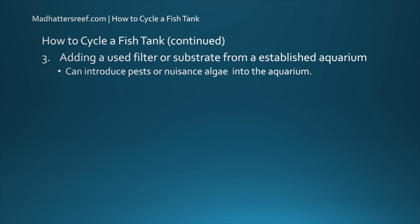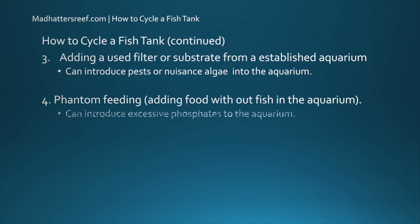The fourth method of cycling an aquarium is phantom feeding. What this is, is basically feeding an aquarium with fish food without any fish in there. The problem with this is it introduces a lot of phosphates into the aquarium because of the amount of food that you have to add to the tank for it to begin cycling. Another issue with phantom feeding is it takes a long time to get the cycle going. Much like the other three methods we've talked about, it can take upwards of four to six weeks to cycle an aquarium.